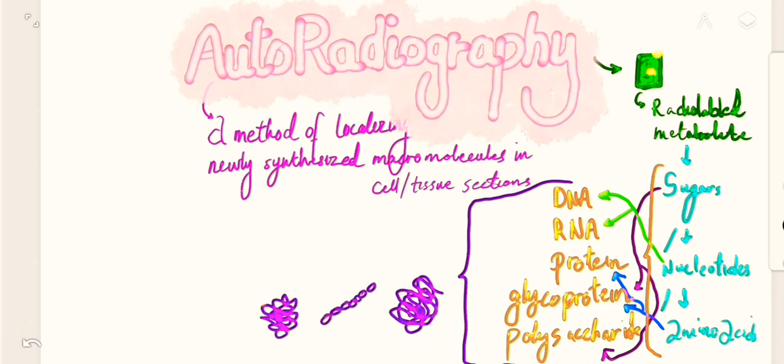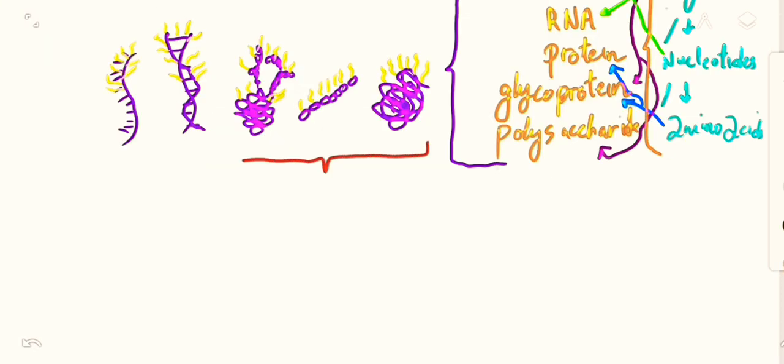All of these - the protein, the carbohydrate chain, the glycoprotein, the DNA strains and the RNA strains - will then radiate some radiation or emit some radiation into the space that they exist in.